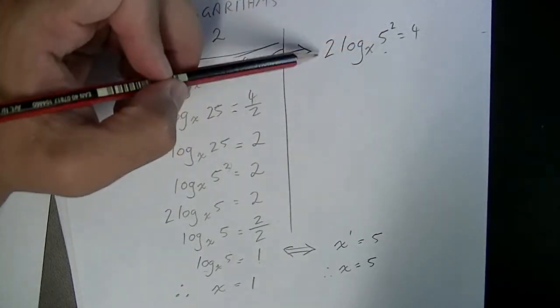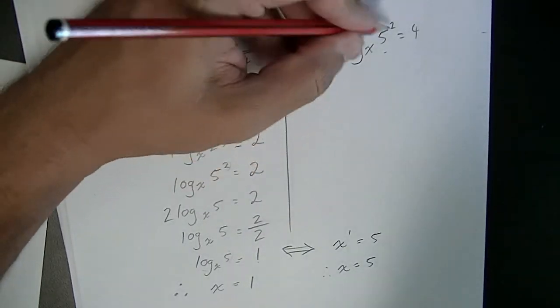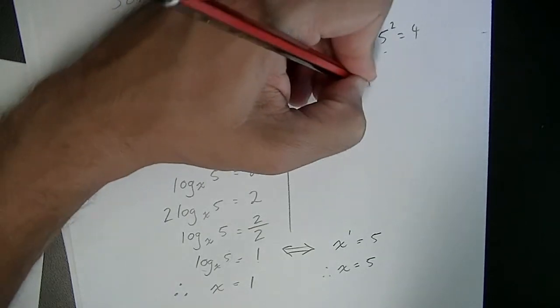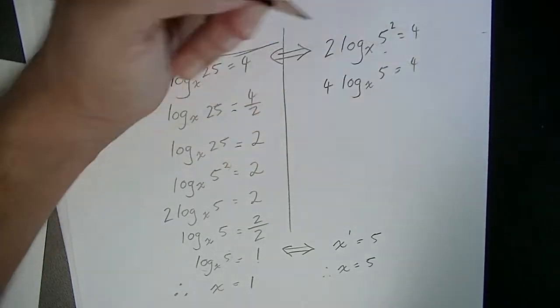Now that squared can come out the front, that gives us 2 times 2 which is 4, 4 log base x of 5 equals 4.